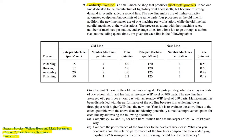Recently, one of its products — the light duty wind hood shelf — has seen an increase in demand. The management team has decided to introduce a new line in addition to the old line to satisfy this increased demand. Both lines have four different processes: punching, breaking, assembly, and finishing. The new line uses higher capacity and automated equipment, with one machine per station, while the old line has several machines working in parallel for each station.